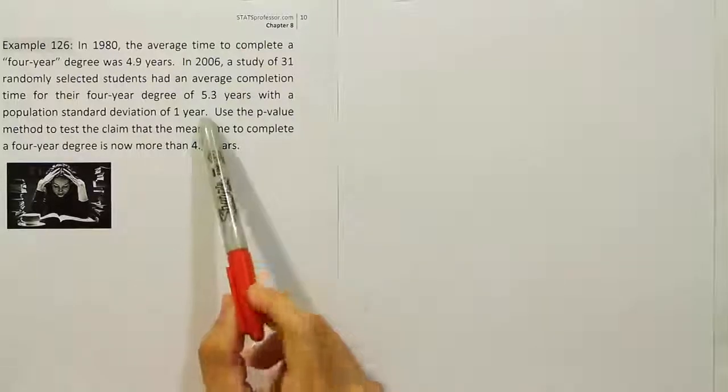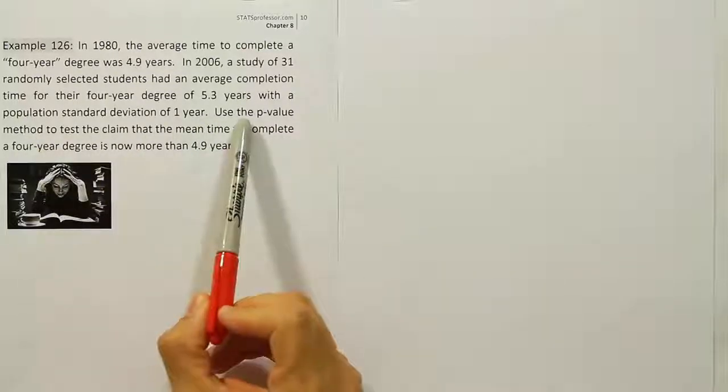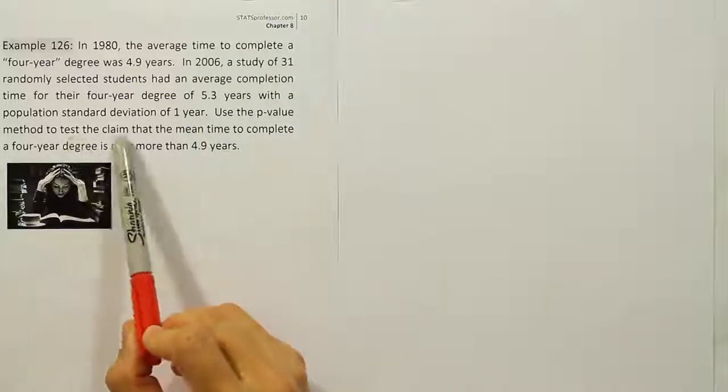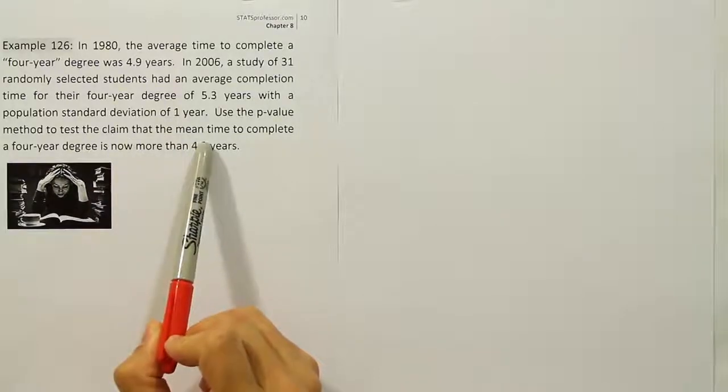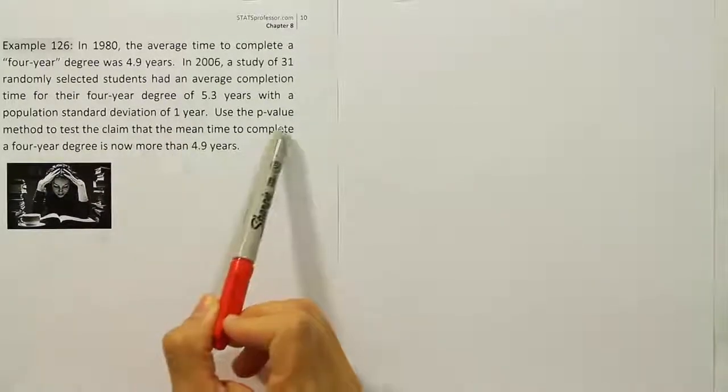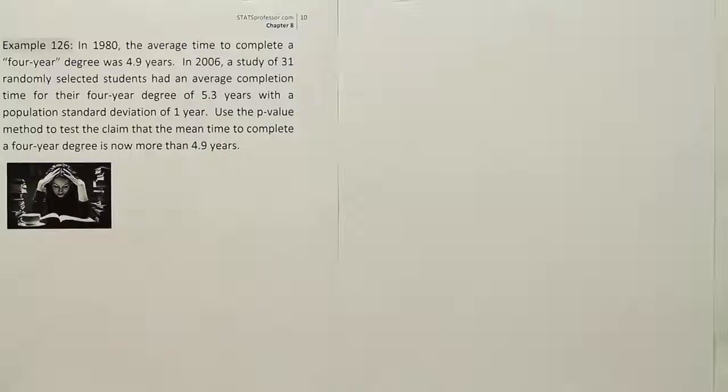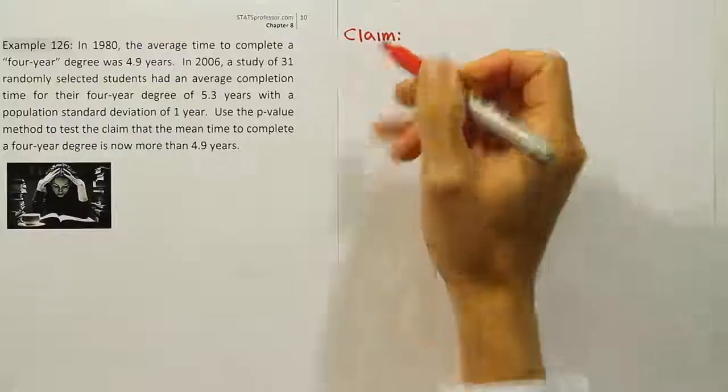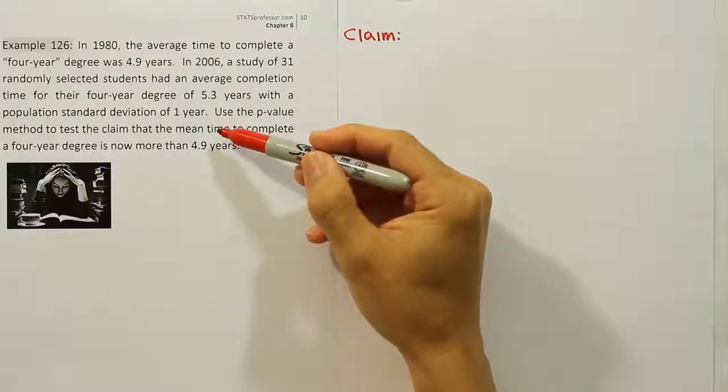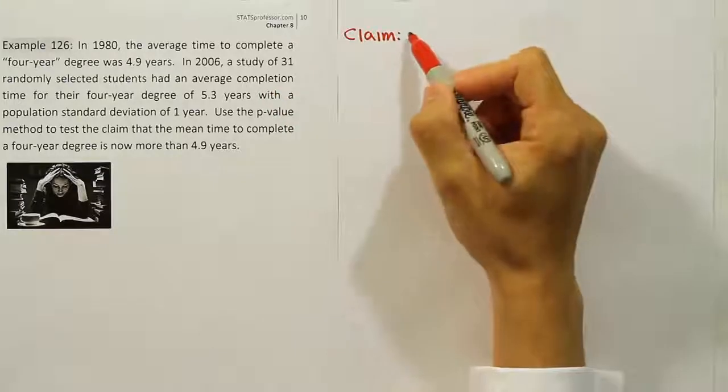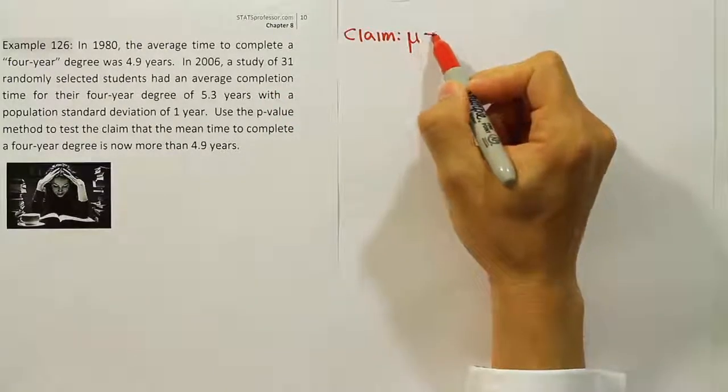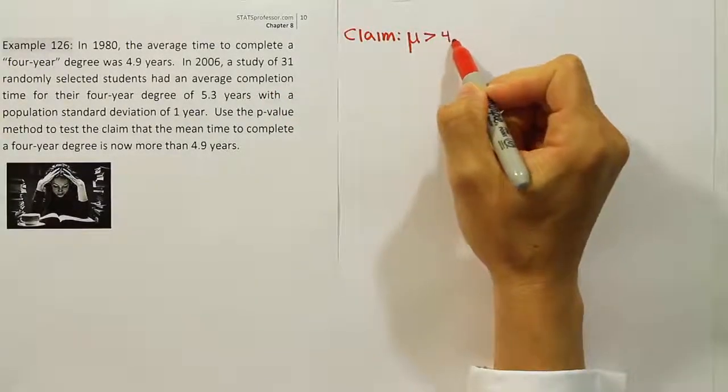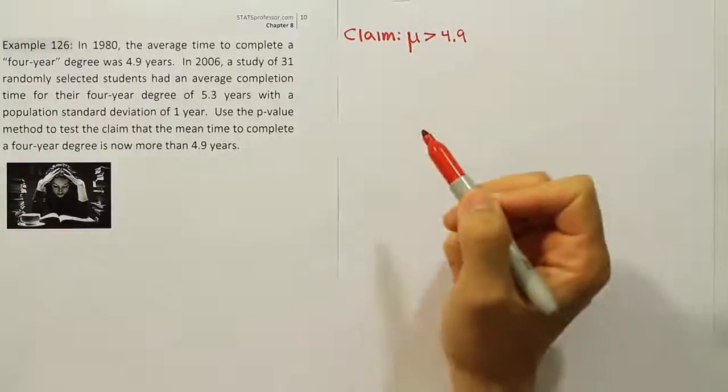So it's a p-value method problem. They're asking us to use the p-value method to test the claim about the mean. It's a hypothesis test about the mean. Let's write the claim down and start with that. The claim is that the mean time is now more than 4.9 years, the mean is greater than 4.9 years. That's our claim.